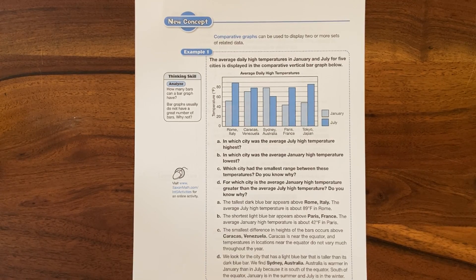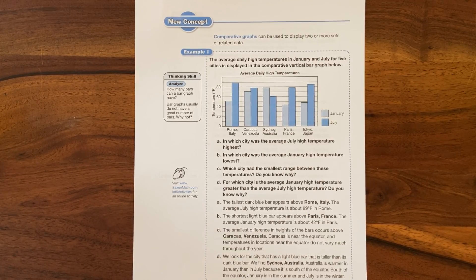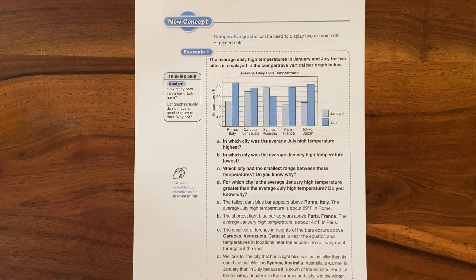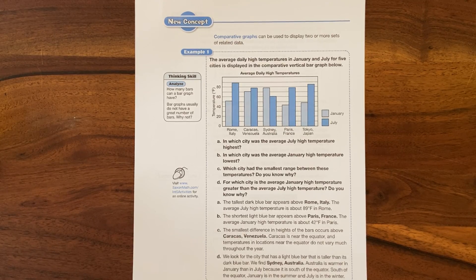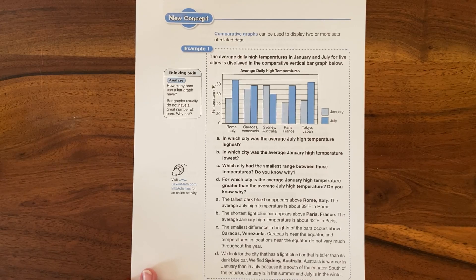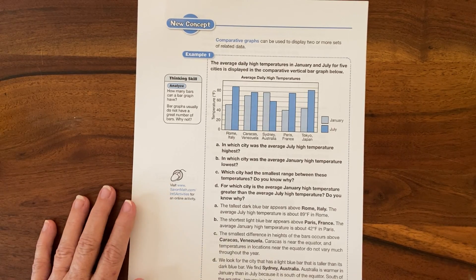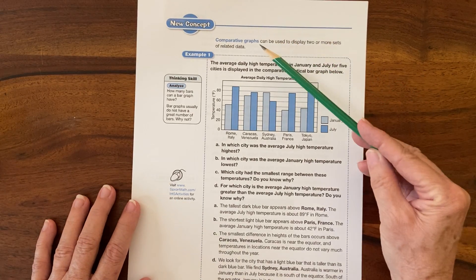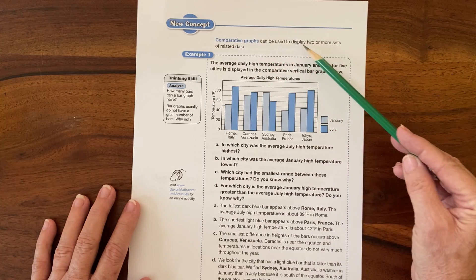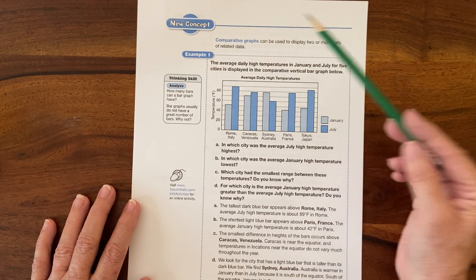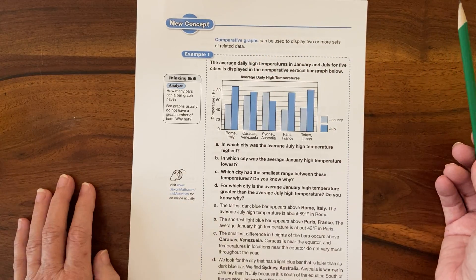Hey everyone, we're on lesson 93 and this one is comparing information. It's comparative graphs, so we're just going to use what the book has because it's hard to draw all these graphs. They display two or more sets of related data, so they're comparing two things.